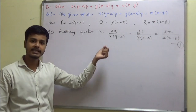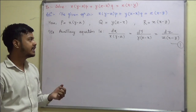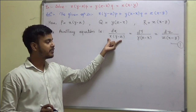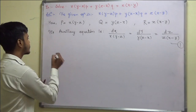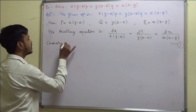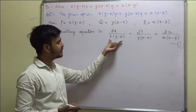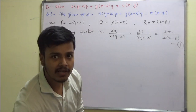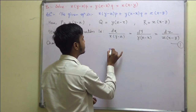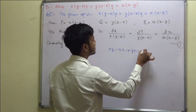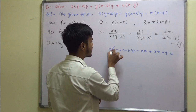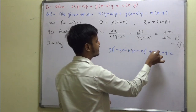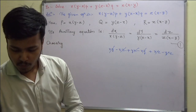Now apply method number 3, that is, the method of multipliers. We need to choose non-zero multipliers such that when you multiply those multipliers by the denominators, the sum becomes 0. If I take the multipliers as 1, 1, 1: 1·x(y − z) + 1·y(z − x) + 1·z(x − y) = xy − xz + yz − xy + xz − yz = 0. So with multipliers 1, 1, 1, the denominator sum is 0, and we can proceed.